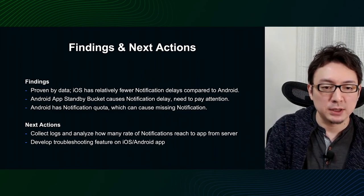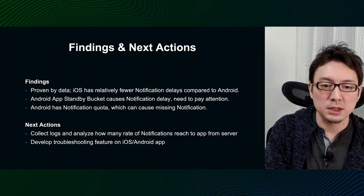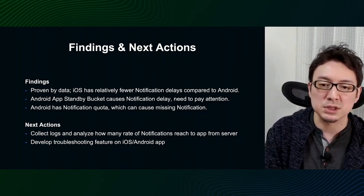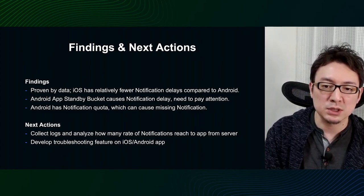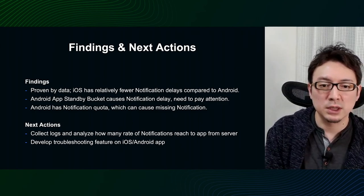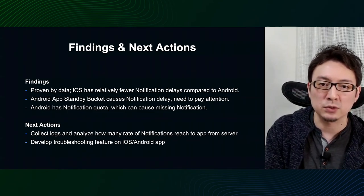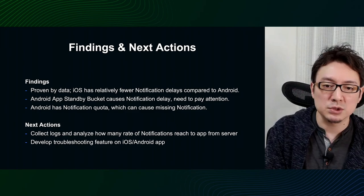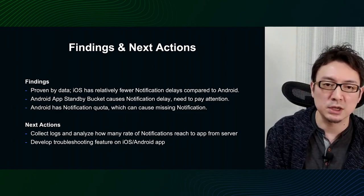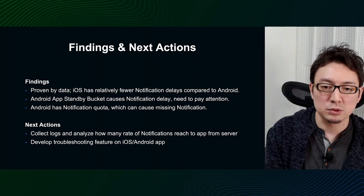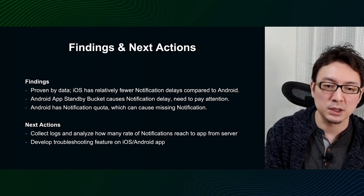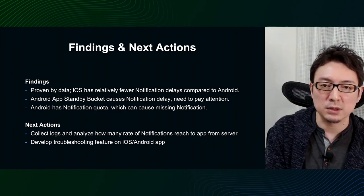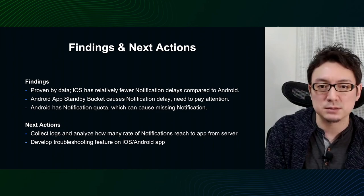One of the things our team would like to do in the future is to compare the number of notifications sent from our server with the number of notifications received by the app, and measure how well notifications are reaching the app. We are also considering implementing a troubleshooting function for users who think they are not receiving notifications. Through this function, we hope to not only help users solve their problems, but also accumulate knowledge on how to investigate the cause — whether it is a misunderstanding on the part of the user or an inconsistency in the data.